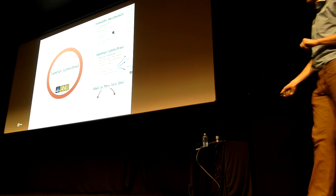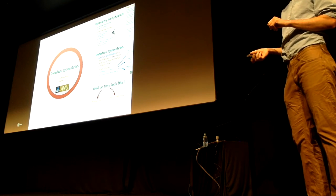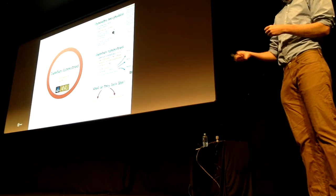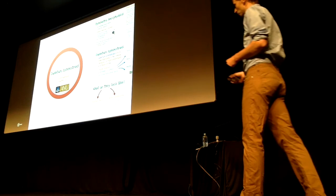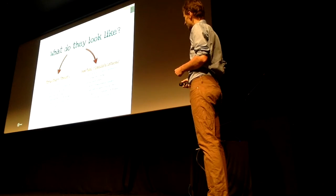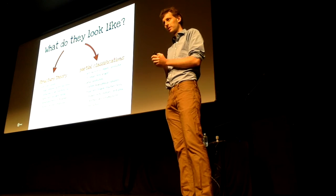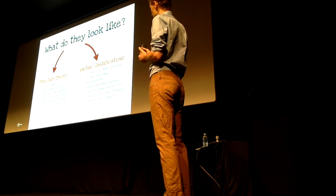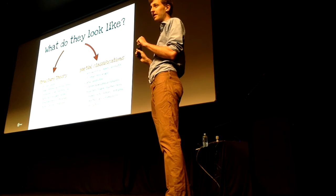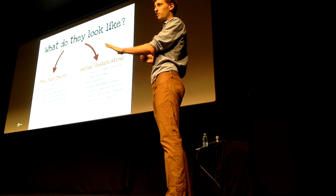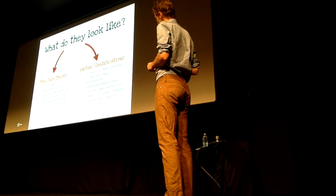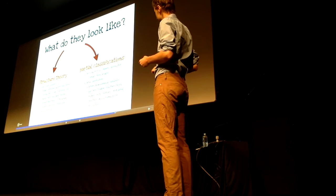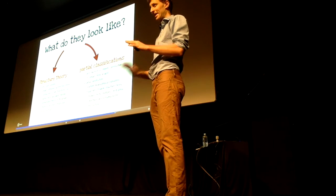The last part of the talk: what on earth do fusion categories look like? So far, I've said that the representation theory of a finite group gives you an example, and I've indicated this one other example with Fibonacci anyons. So what else is out there? We don't know a lot at this point. There's some mountain up there — the full classification of fusion categories — and we really haven't even left the parking lot. We're really at the beginning of the game in both structure theory and classification.